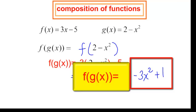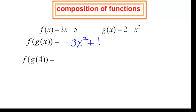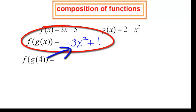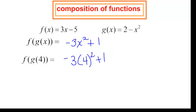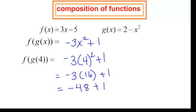But now I want to show you something. We found the function f at g of x and it was negative 3x squared plus 1. Let's say I wanted you to find f at g at 4. You already found the function f at g of x, so wherever I see x I plug in 4. I will have negative 3 times 4 squared plus 1. Do exponents first: 4 squared is 16. Then negative 3 times 16 is negative 48, plus 1 is negative 47.